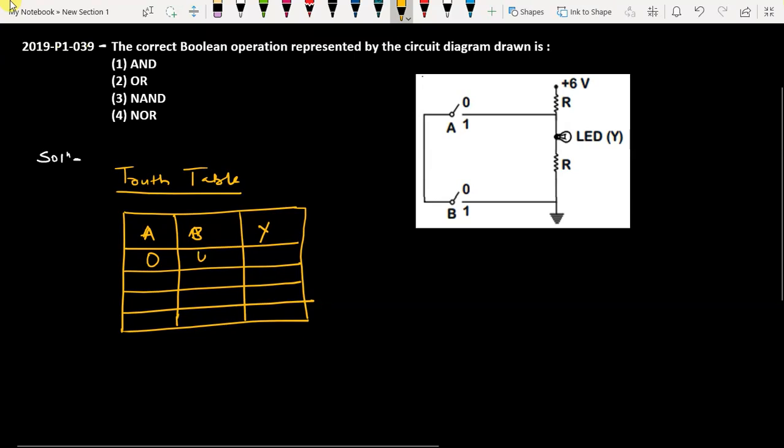If you take 1, 0, let's say A is open and B is closed, even then this is 1. If you take opposite, A closed, B open, the output is also 1.